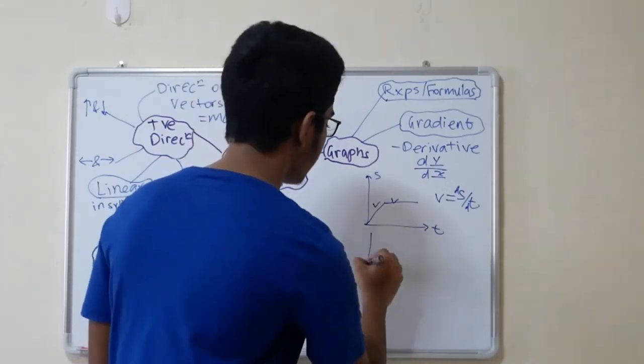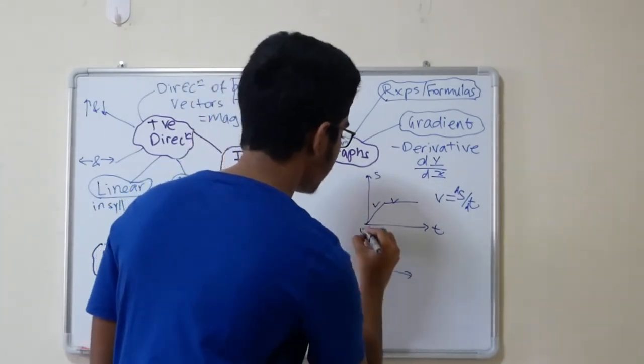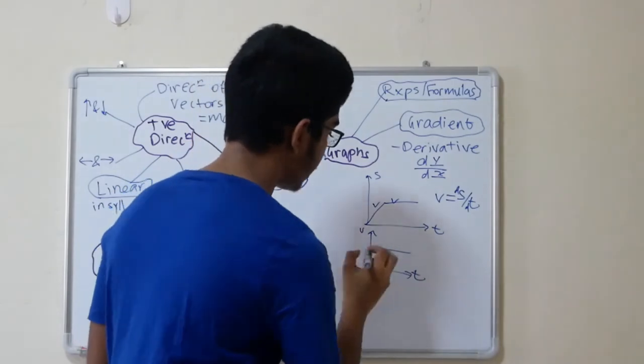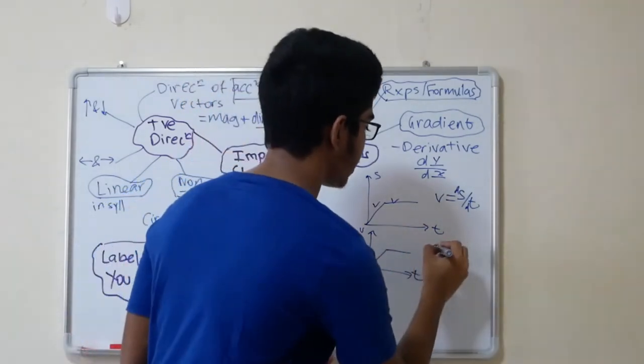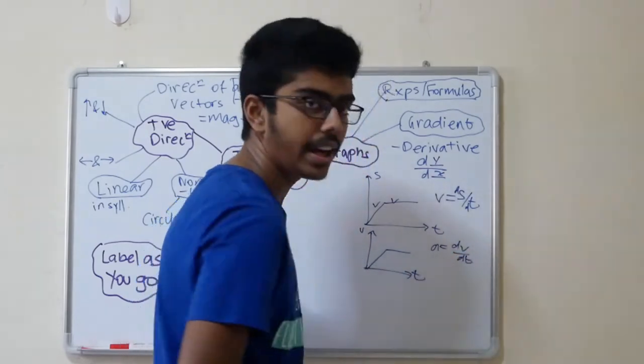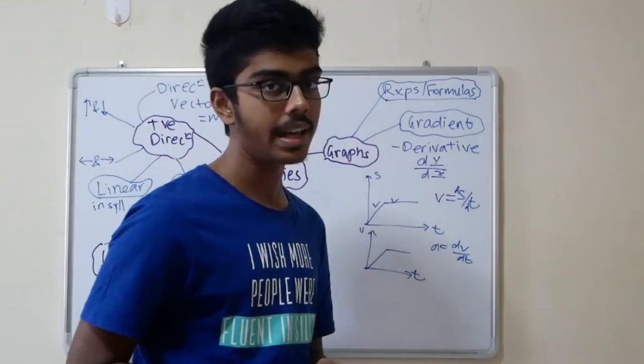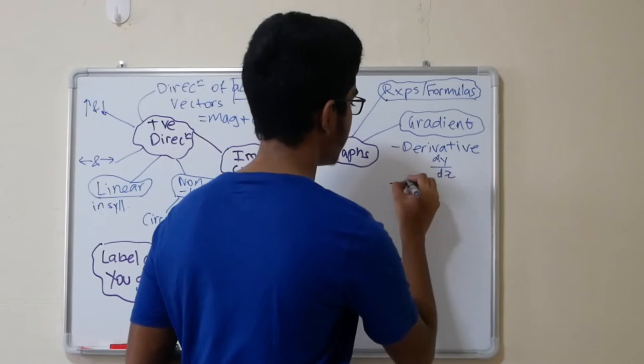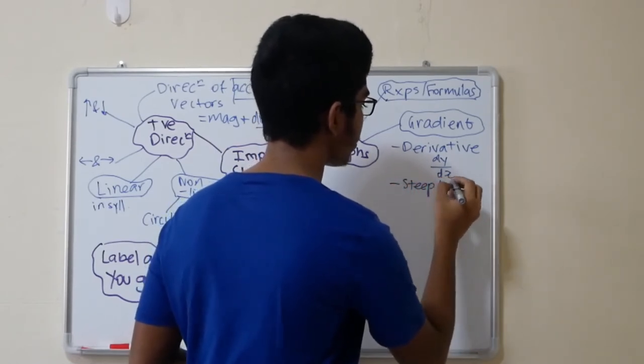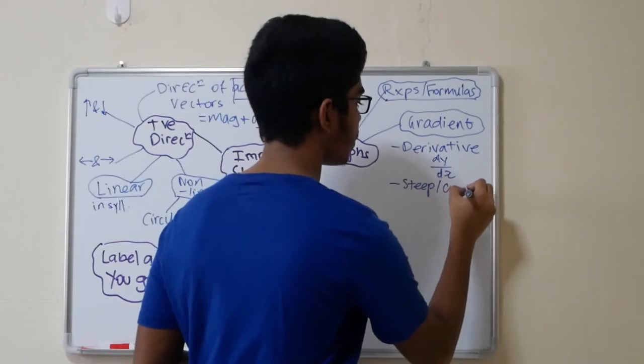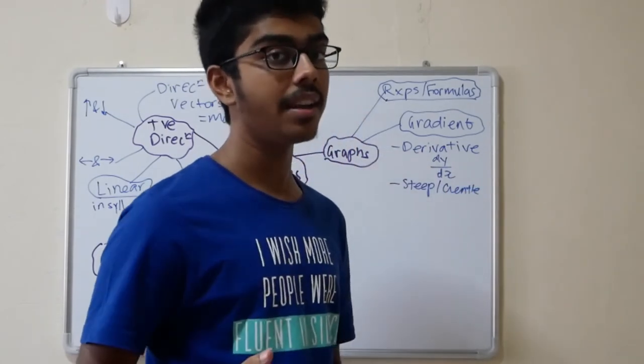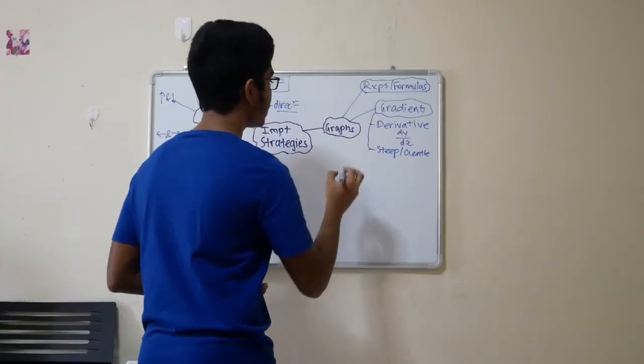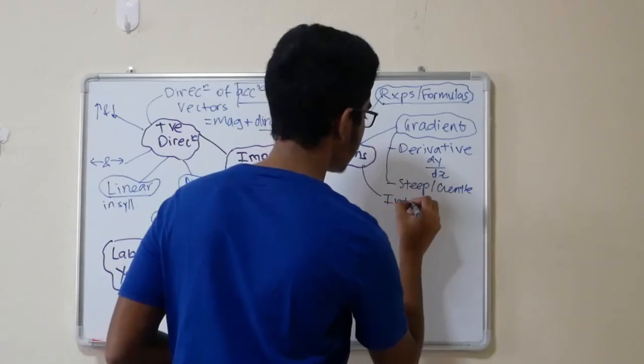Now, another case. Let's look at a velocity time graph. You have a velocity like that. The gradient represents the acceleration. Because acceleration is dv over dt. So, everything revolves around derivatives. The second thing you guys take note is the value of the gradient. The magnitude of the gradient. Is it steep or is it gentle? So, steep could mean a higher value of something. In the case of a velocity time graph, a higher value of acceleration.